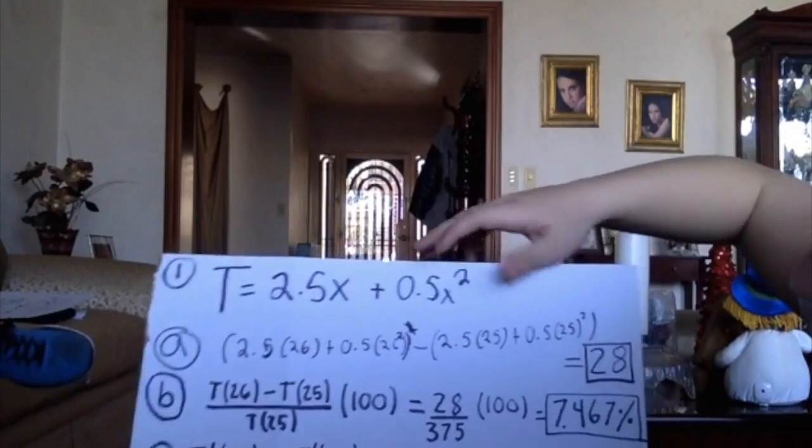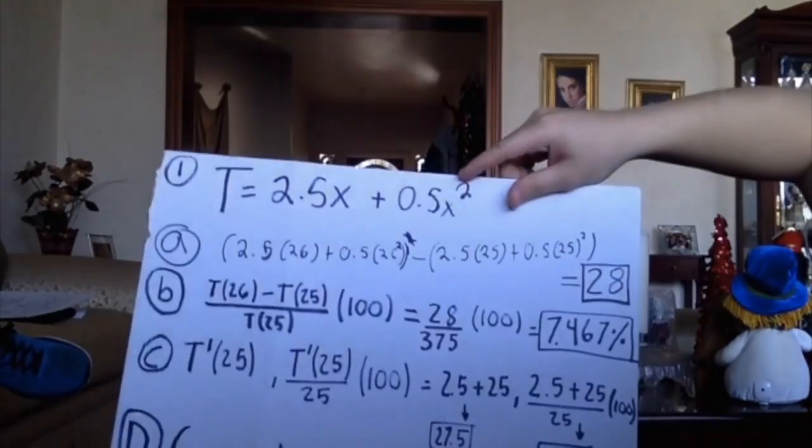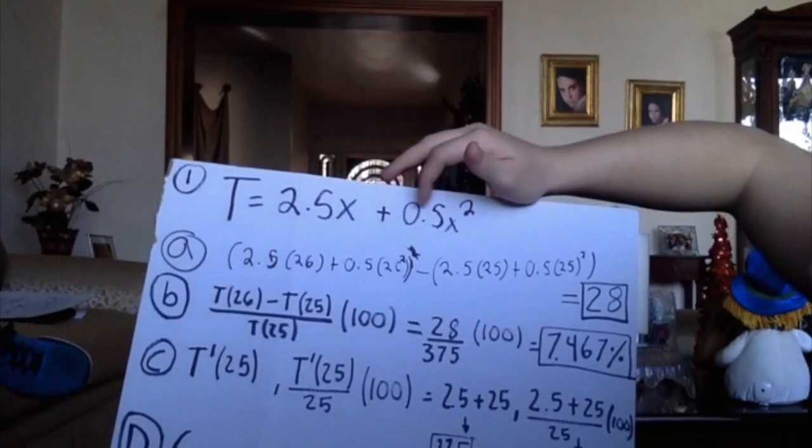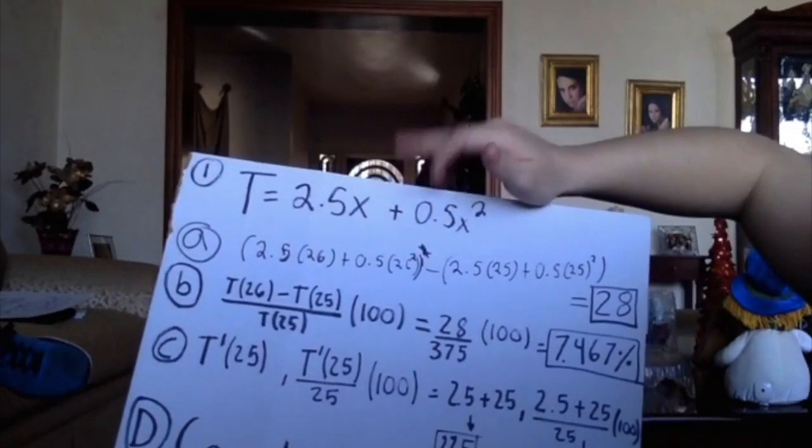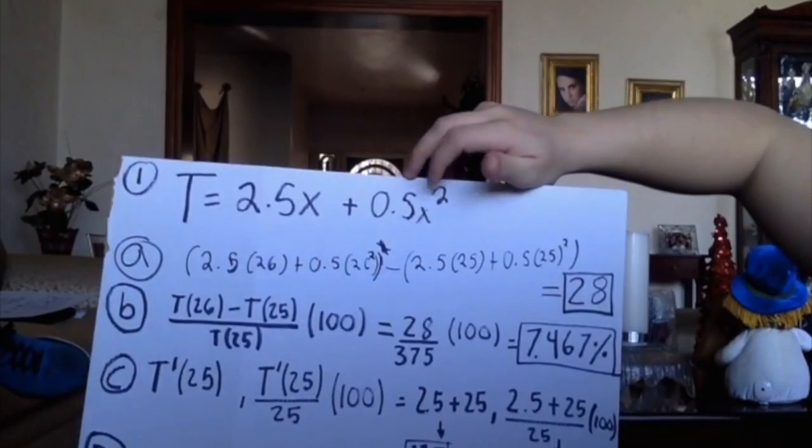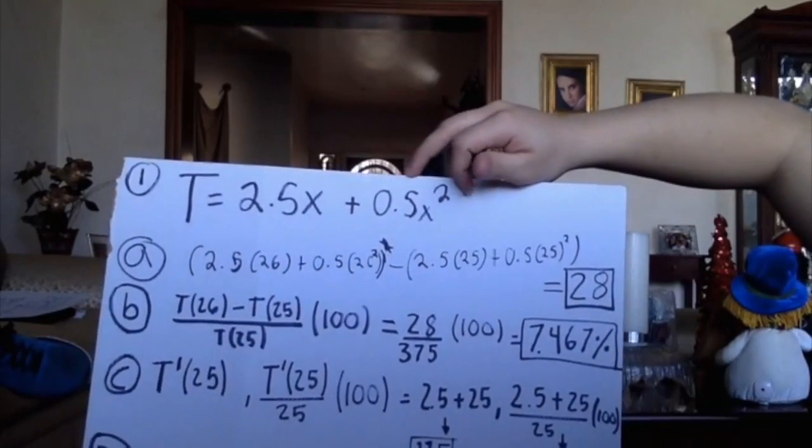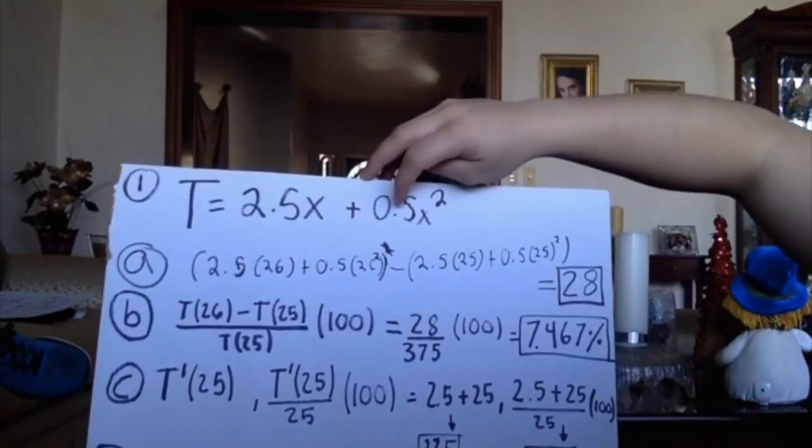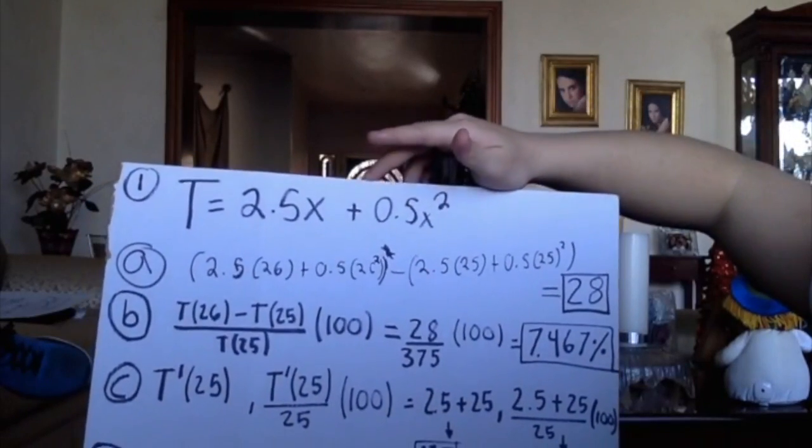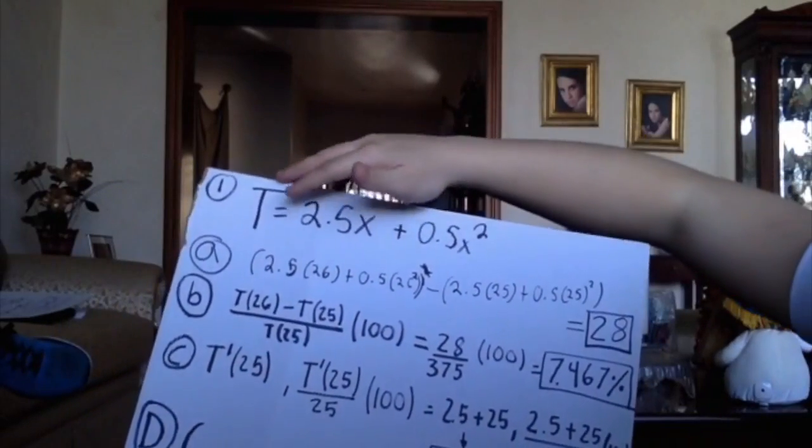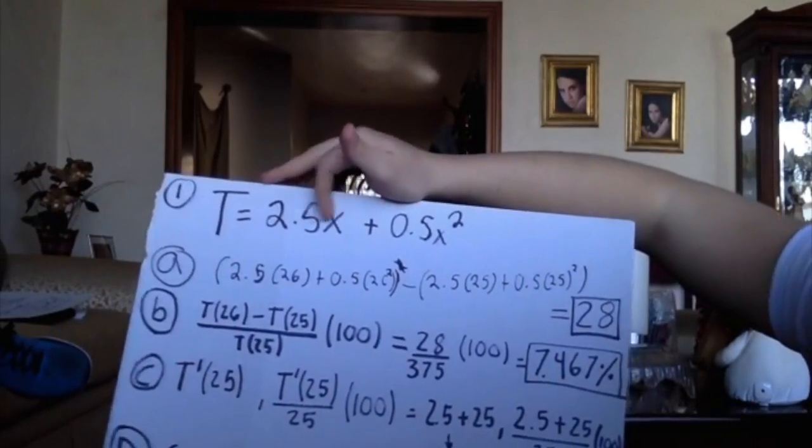So in this term is only 2.5 plus 0.5x to the power of 2. And in this part, to get the derivative, first we need to bring down number 2. And number 2 times 0.5 will give us 1. And the exponent, which is 2, we need to subtract it by 1. So it will give us, in this term, the derivative will only be x, because x to the power of 1 is x. So the derivative of this is 2.5 plus x.